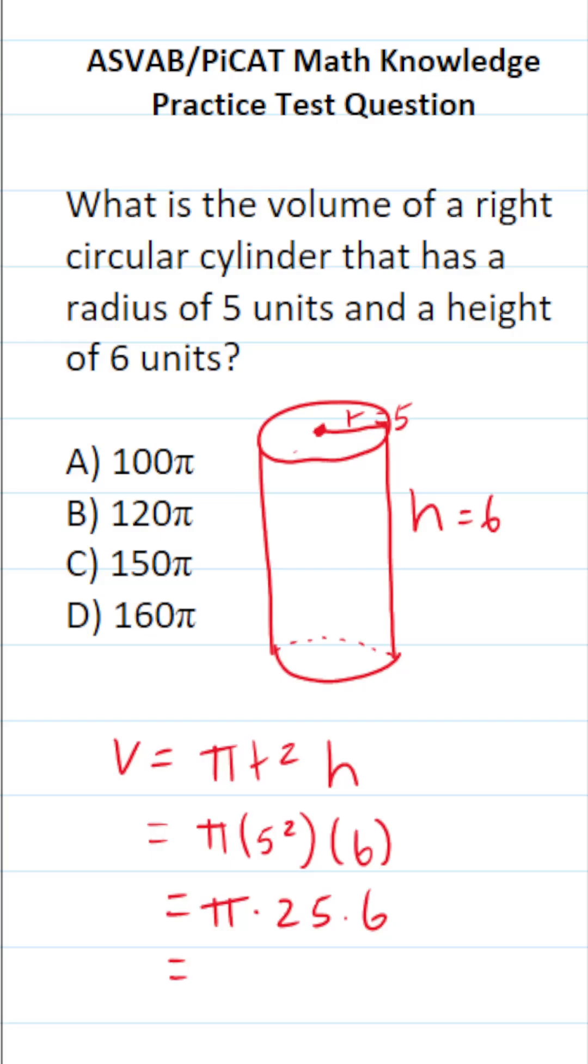25 times four would of course be 100. 25 times five would be 125. 25 times six is 150.